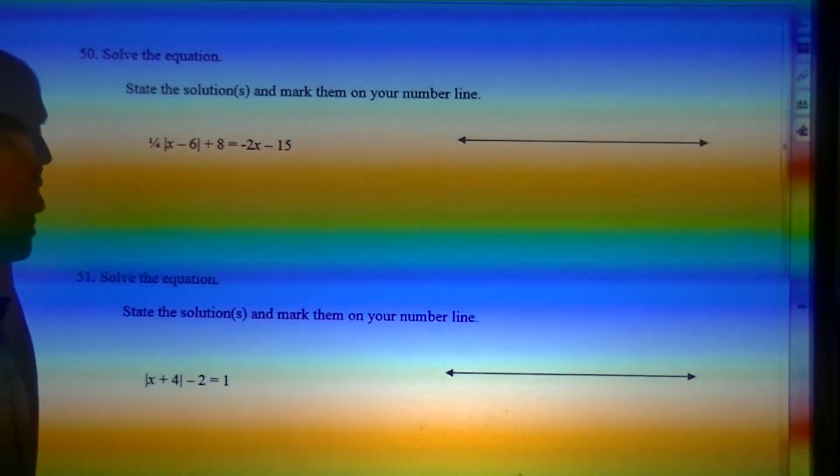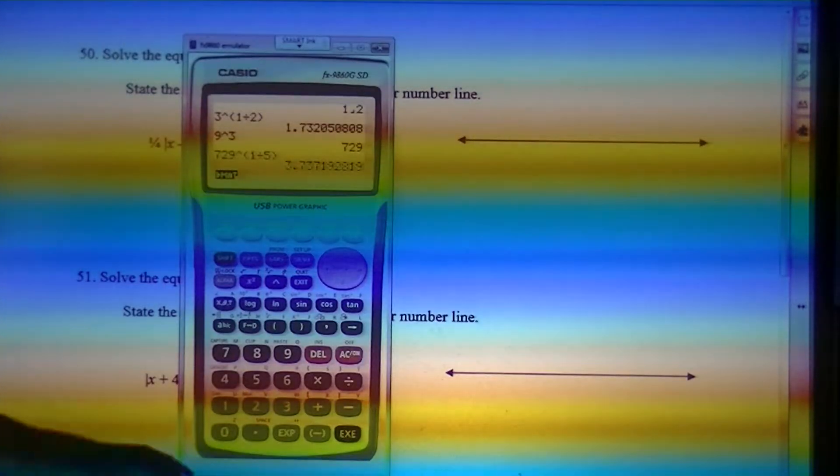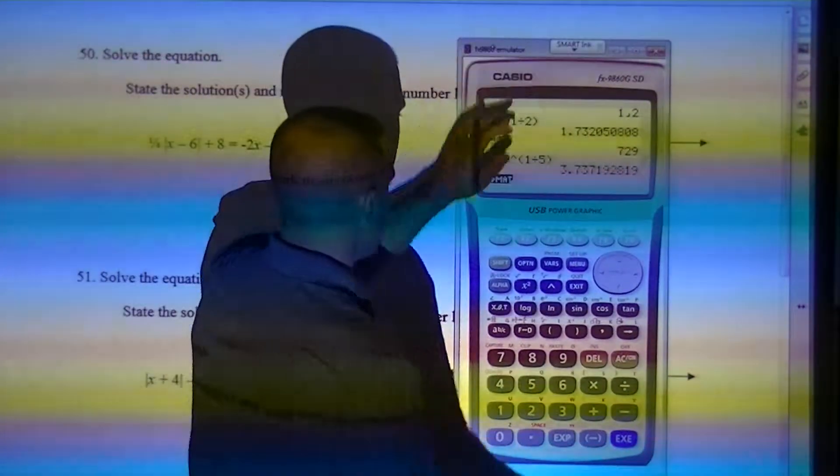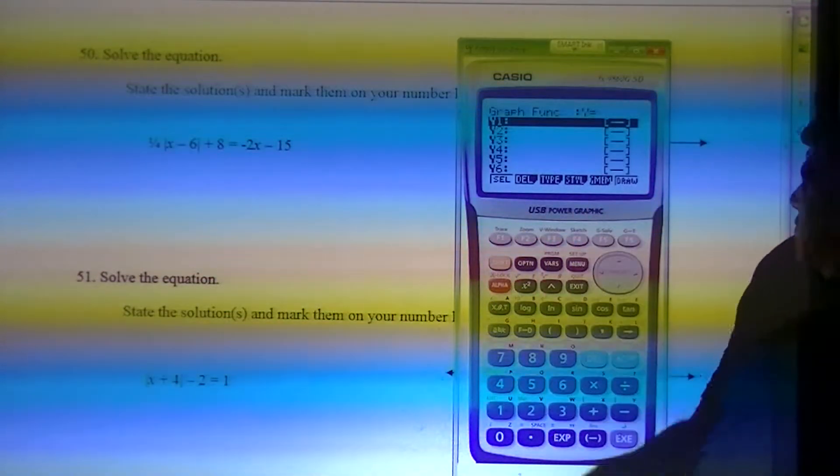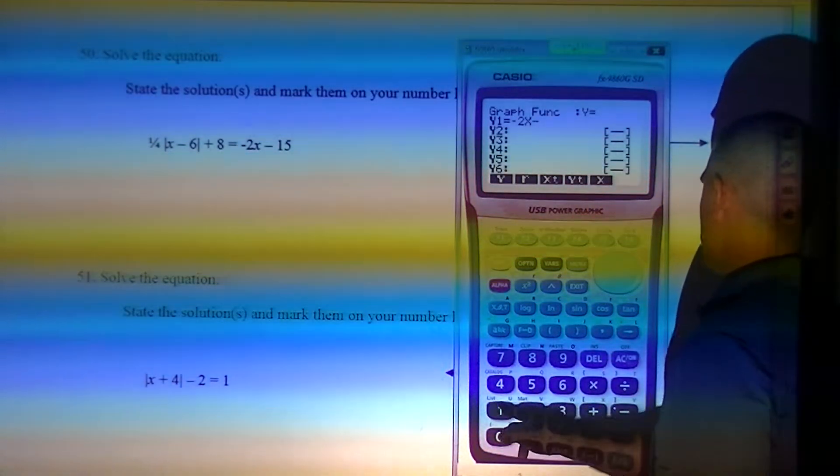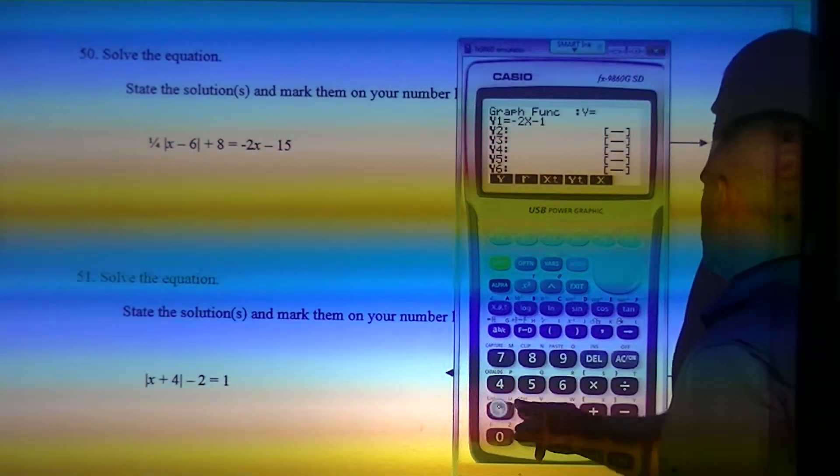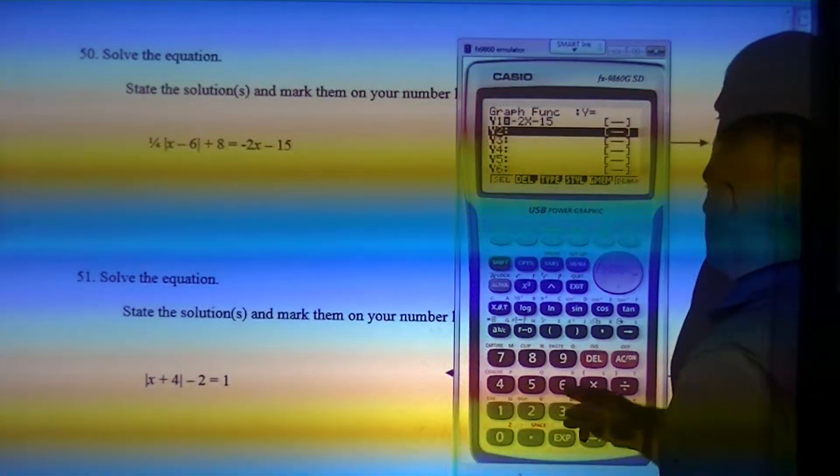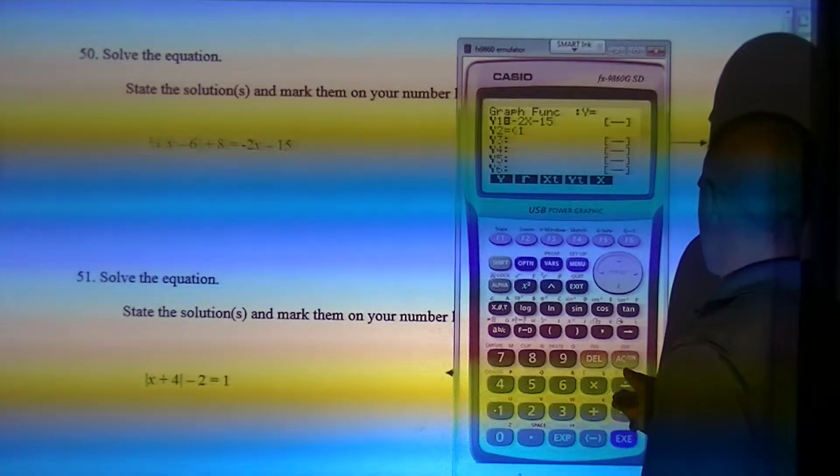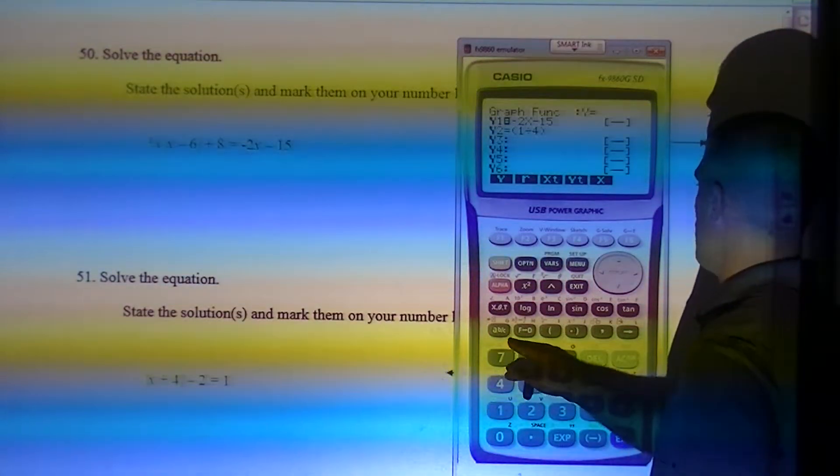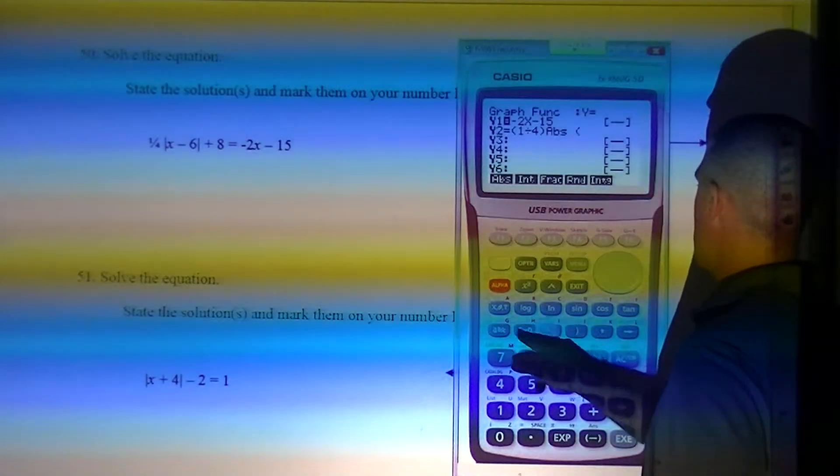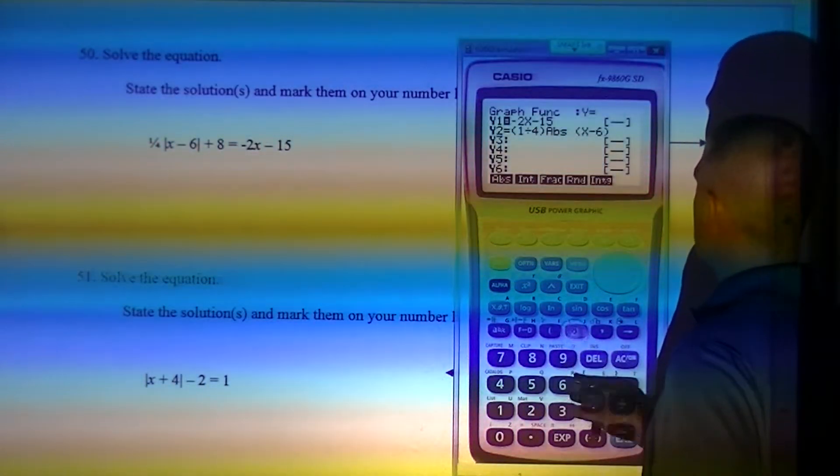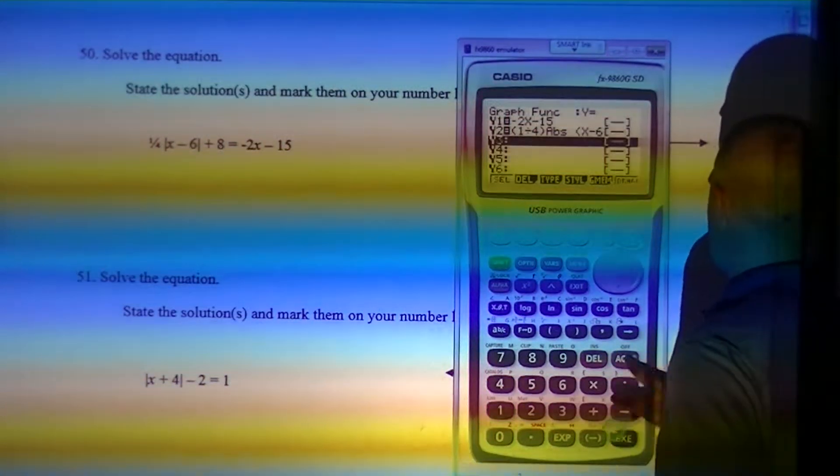State the solutions and mark them on the number line. So this is absolute value. We're going to go into menu and graph. That's how we always do our absolute value. So as you recall, we're going to do negative 2x minus 15. We always do the right side first. Then I do 1 fourth. Option, num, abs, x minus 6, plus 8. Draw.